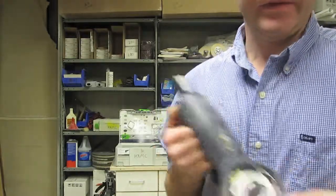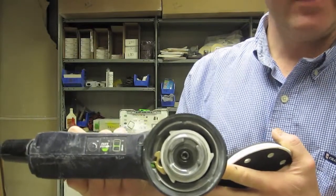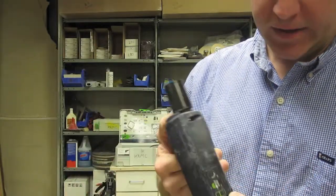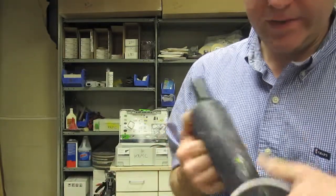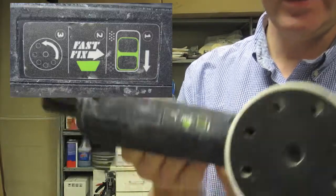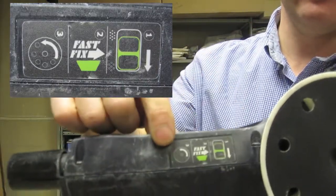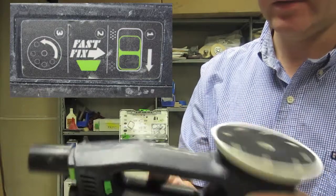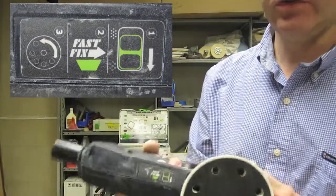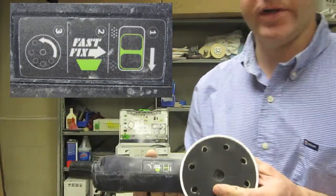You can change the different pad hardnesses or swap the pad out without finding an Allen wrench. The instructions are printed directly on the tool, so even a new user can figure it out pretty easily.